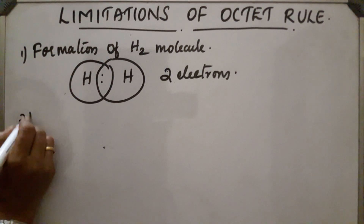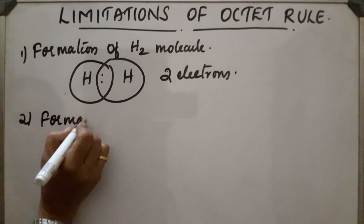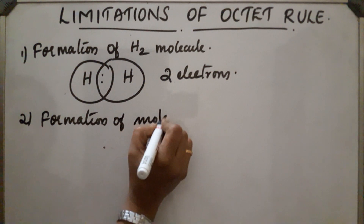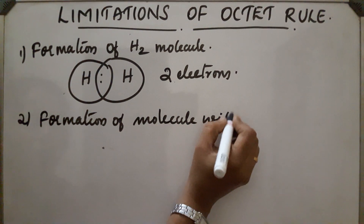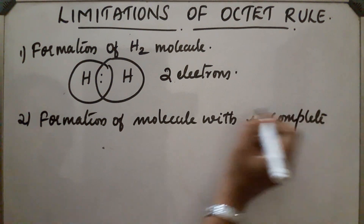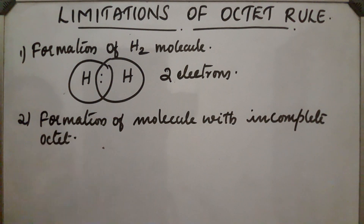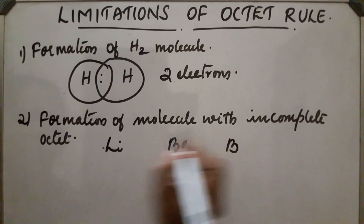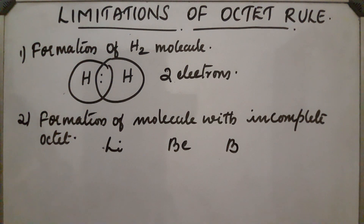The second exception is the formation of molecules with an incomplete octet. Examples include lithium, beryllium, boron, and so on. In these cases, the octet rule is not applicable for the covalent bonds formed by lithium, beryllium, and boron.